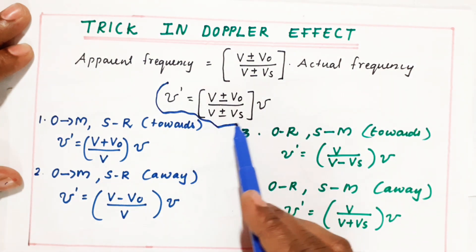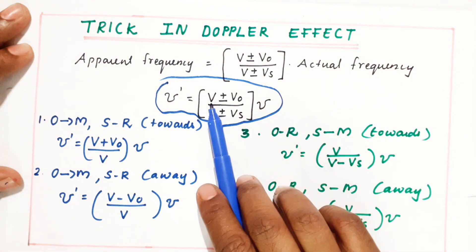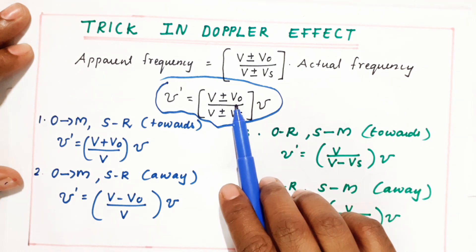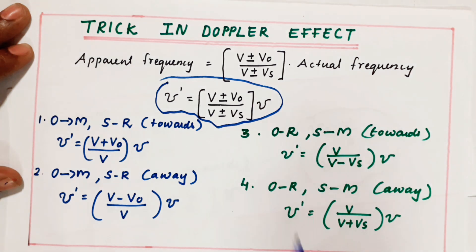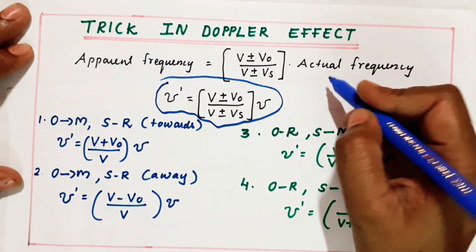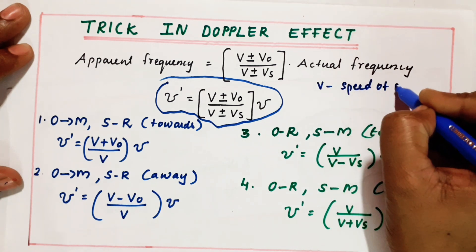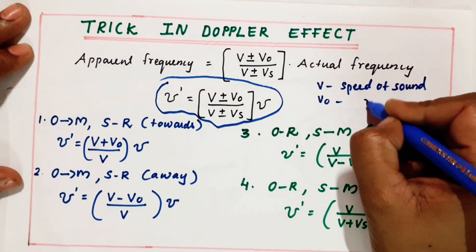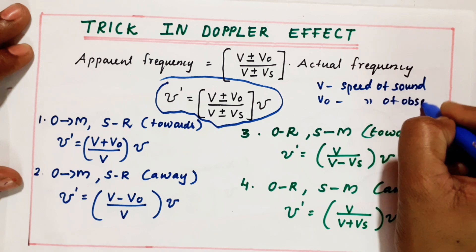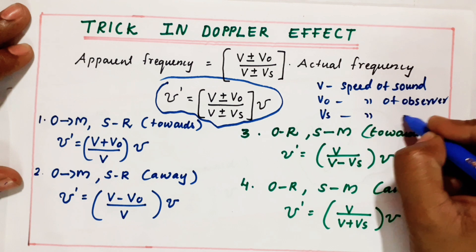Nu dash is the apparent frequency. V is the speed of sound — they will give it in the question. V_O is the speed of the observer, and V_S is the speed of the source. Nu is the actual frequency.